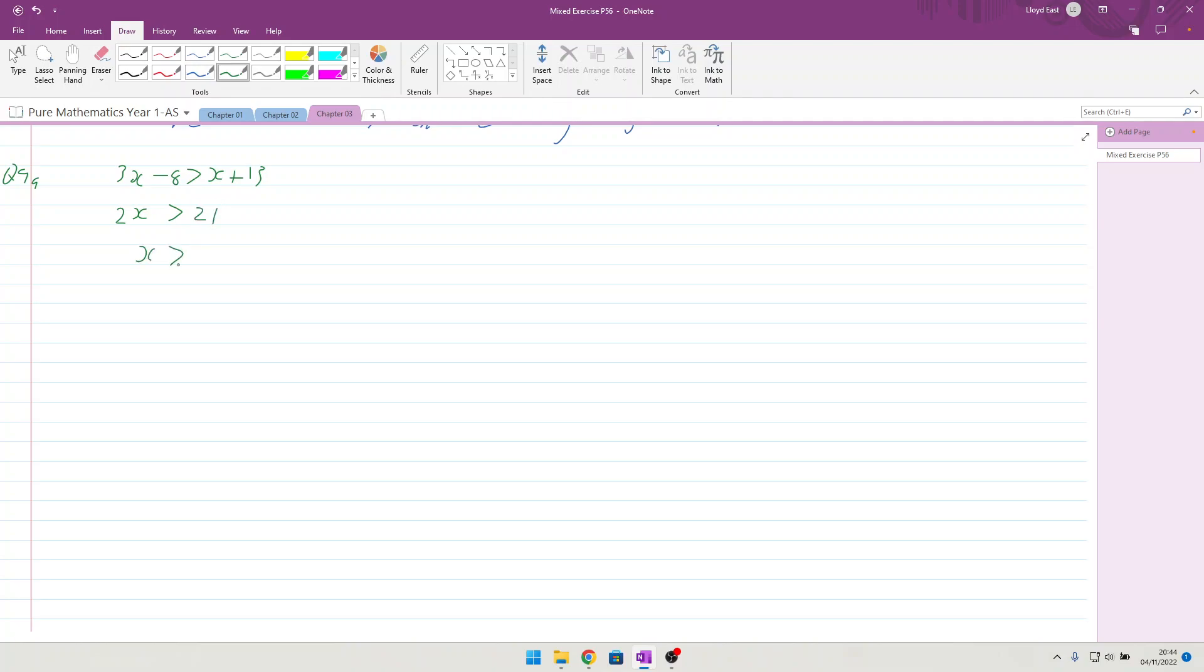Giving us x is greater than 21 over 2, which is x is greater than 10.5. To put that into set notation, you need to have your curly brackets, which I can never draw, but we'll do our best. We need to say that the values of x fall under the rule of x is greater than 10.5.